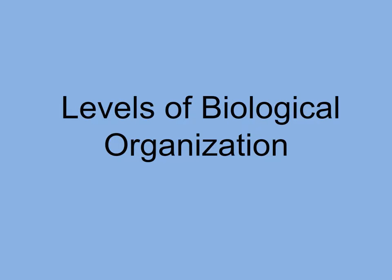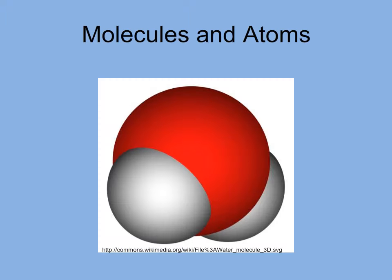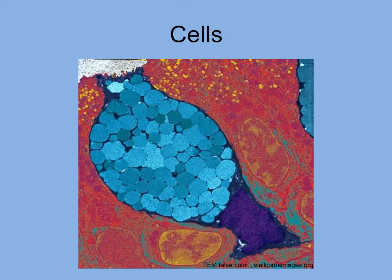We can look at life from different levels, from the atoms that make up parts of the cell to the earth as a whole. An atom is the smallest unit to retain chemical properties. Atoms are arranged into molecules — this water molecule consists of two hydrogen atoms bonded to one oxygen atom. Cells, the basic units of life, are composed of molecules. Goblet cells, like this one, produce mucus to protect various organs such as the intestine.